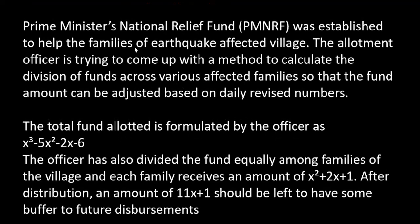Hello everyone, we are starting with the next case study which is based on the polynomials chapter. The case study says: PMNRF was established to help the families of earthquake-affected villages. The allotment officer is trying to come up with a method to calculate the division of funds across various affected families so that the fund amount can be adjusted based on daily revised numbers. The total fund allotted is formulated by the officer as x³ - 5x² - 2x - 6.